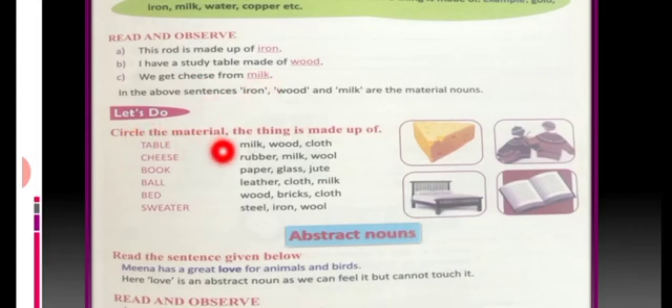Now, let's do circle the material the thing is made up of. Table is made up of wood. Cheese is made up of milk. Book is made up of paper. Ball is made up of leather. Bed is made up of wood. Sweater, of course, is made up of wool. So, all the substances which are used to make these things are called material nouns. I hope you all must have understood this.